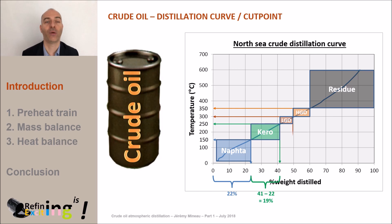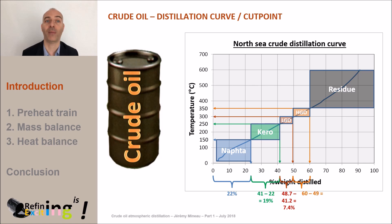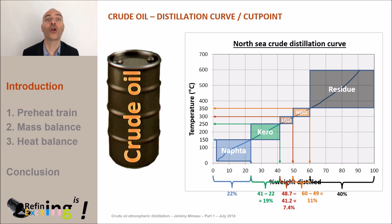Same exercise with the light diesel: we will recover about 49%. Subtracting the 41% of naphtha plus kerosene, that gives 7% of light diesel. For heavy diesel at 350 degrees C, that will remain 11%. The atmospheric residue represents 40% of the crude. Of course, this exercise is only valid for a given crude — namely a crude oil from the North Sea. If we had taken a different crude, we would have found different quantities.